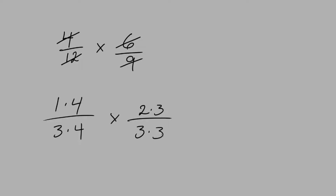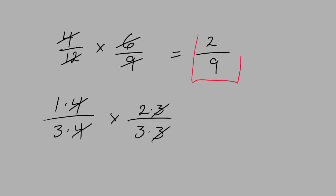Then we need to cancel out any common factors in the numerators and denominators. We can cancel out a 4 and we can cancel out a 3. So in the top we have left over 1 times 2 which is 2, and in the bottom we have 3 times 3 which is 9. So we have 2 over 9 for our final answer.